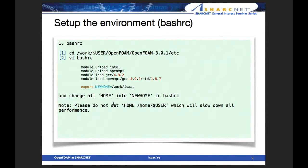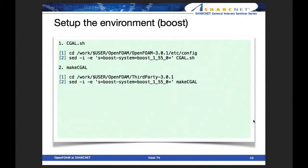There are steps you need to change for the Boost setup. cgal.sh is located in the config directory, and using sed you can change the boost system part to boost 1.55.0. You also need to change the MakeFiles — change make_cgal, which is located in the third-party packages, and change the boost system reference accordingly. SharcNet has a slightly different configuration from a general setup, so you have to change this one appropriately.